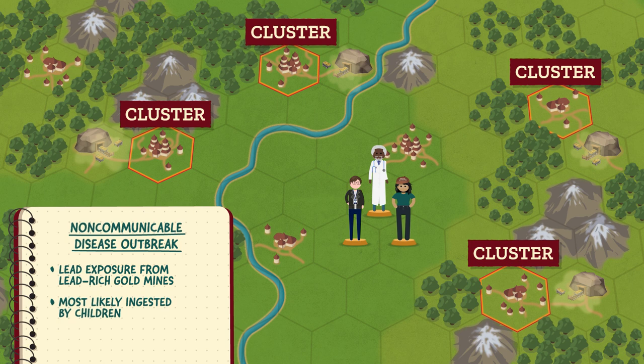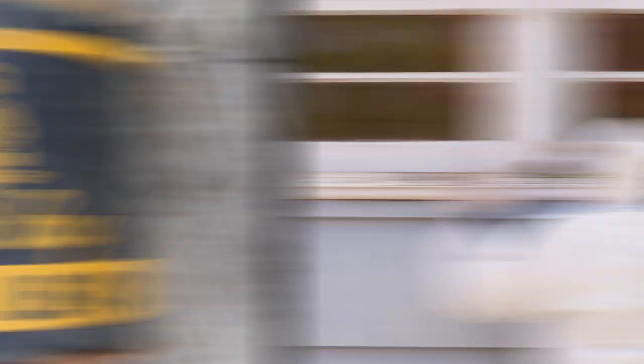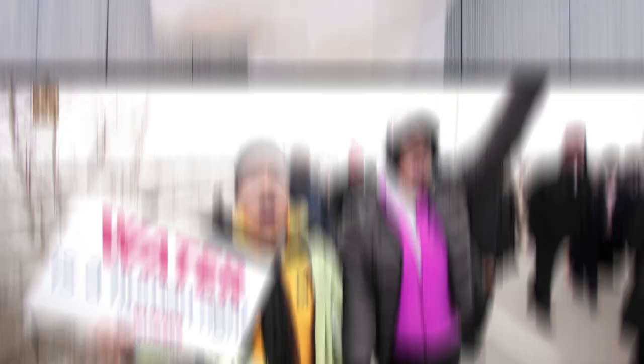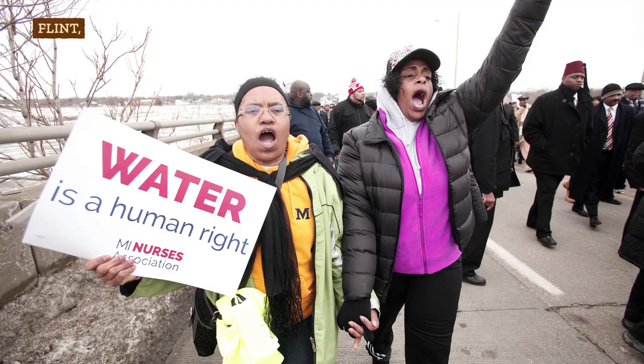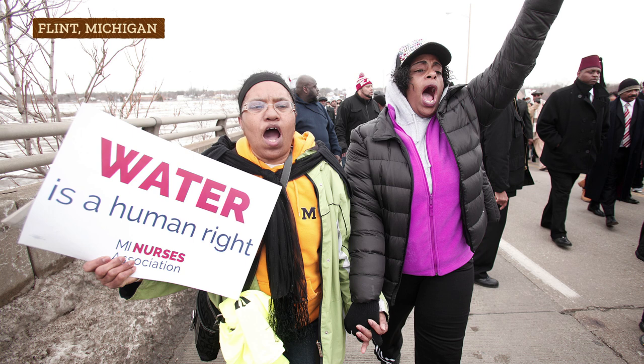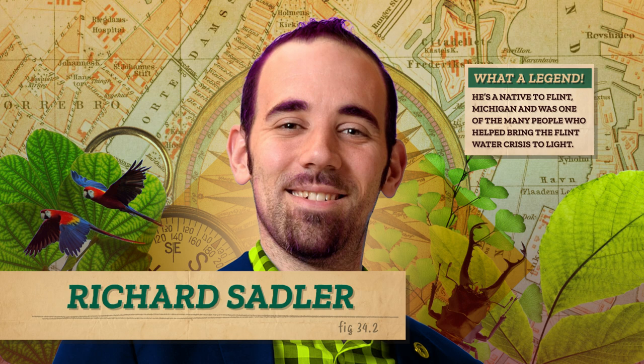Nigeria isn't the only place struggling with lead. The United States also has a high rate of lead poisoning in children. Areas with homes built before lead paint was banned in 1978 can still have lead paint chips or lead dust in the home or even in the soil, which are very harmful and cause neurological damage. And using our medical geography skills to track disease can affect public health far and wide, like Dr. Richard Sadler and other medical geographers have done in the case of lead-contaminated water in Flint, Michigan, which sparked a national debate about environmental justice and the conditions and policies we need to live safe lives.